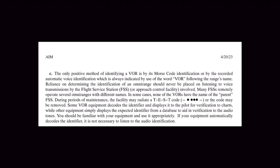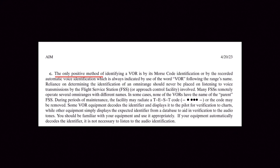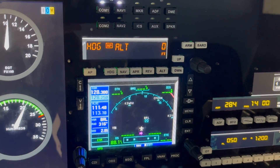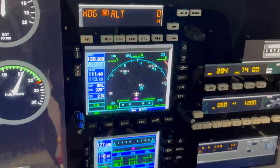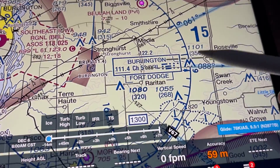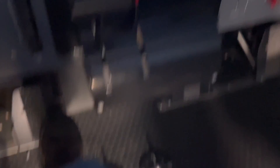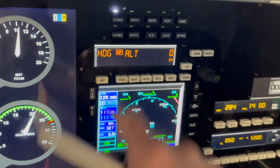The fourth step is to positively identify the frequency. The AIM 1-1-3 section C notes that the only positive method of identifying a VOR is by its Morse code identification or by the recorded automatic voice identification. While verifying after double checking sounds redundant, it does serve two purposes. First, it's another way to ensure that you've entered the right frequency. Second, it allows you to ensure the station is actually working. If you don't hear the Morse code or verbal recording, you've either entered the wrong frequency or the station is down.